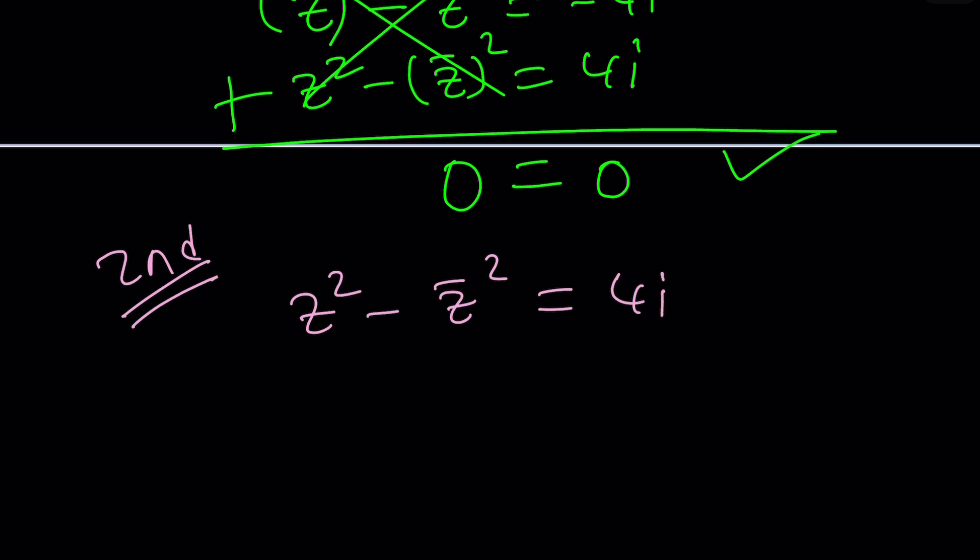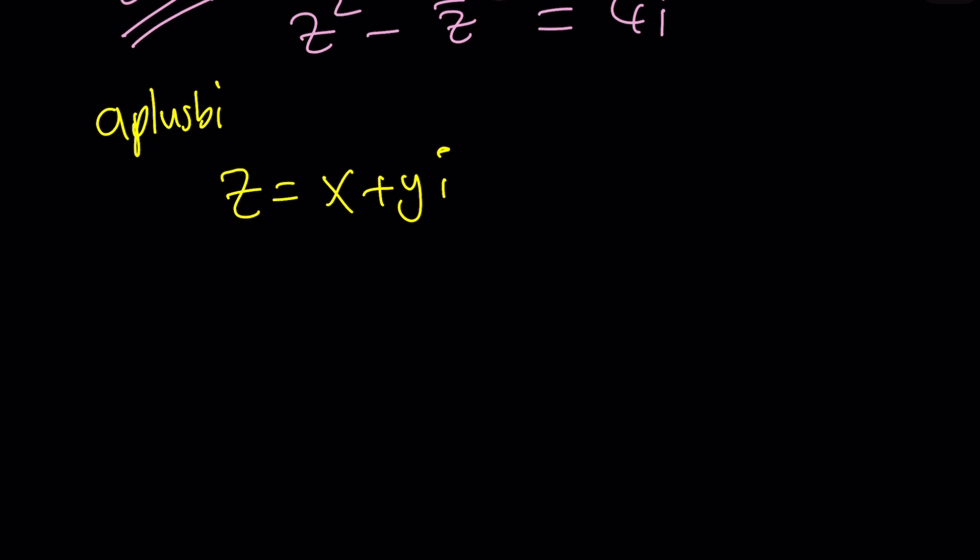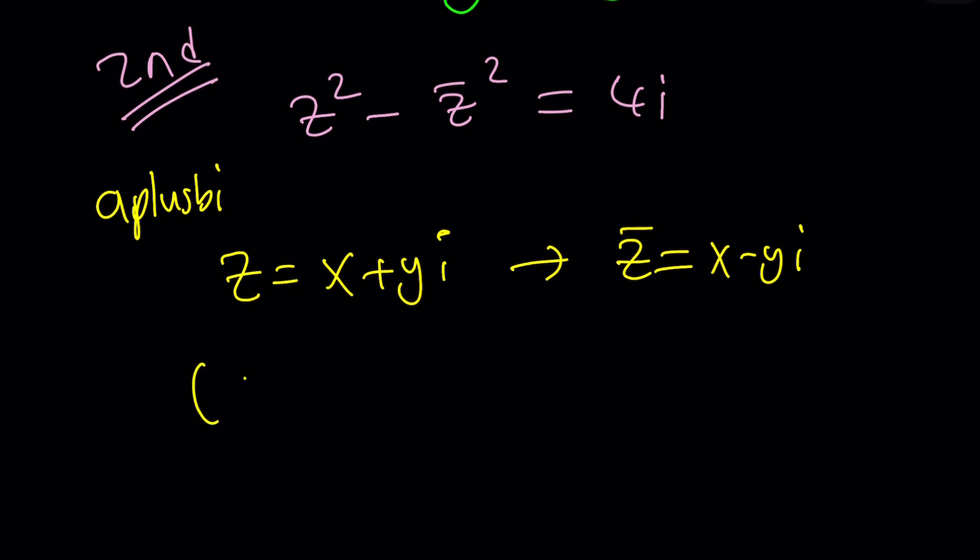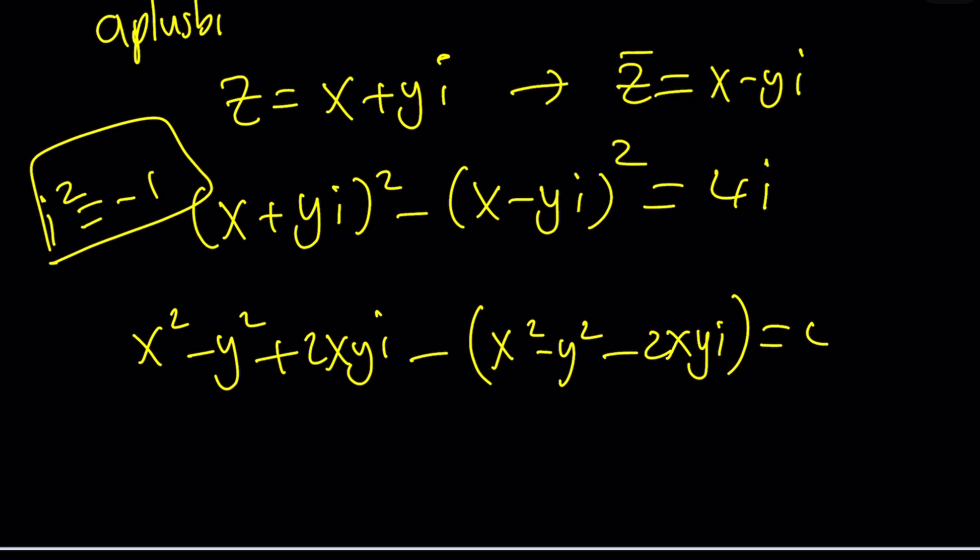Sorry for this problem, a plus bi, which is the name of this channel, by the way. I'm going to use z equals x plus yi. Because this is a locus problem, as you will see in a little bit. Now I'm going to go ahead and replace z with that. So z bar would be x minus yi, which is the complex conjugate. We could have done this before, but I still wanted to show you the first method because I think that's also interesting. Now if you expand it, you're going to get x squared minus y squared plus 2xyi. Careful because i squared is negative 1. Don't ever forget that. Minus x squared minus y squared minus 2xyi. And that should give you 4i. Nice.